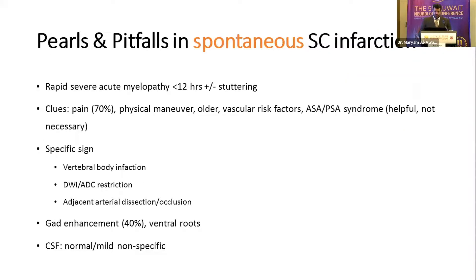In spontaneous spinal cord infarction, patients usually reach maximum deficit within 12 hours, though the course may be stuttering. Clues to diagnosis include pain in 70% of patients, a history of physical maneuver, and occurrence in elderly patients with vascular risk factors — though young people can also be affected. Anterior or posterior spinal artery syndromes, if present, are helpful but should not be required to make the diagnosis. There are some specific signs described with spontaneous spinal cord infarction that I will describe next.